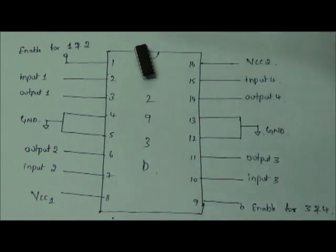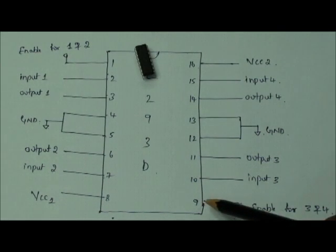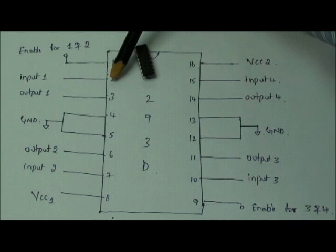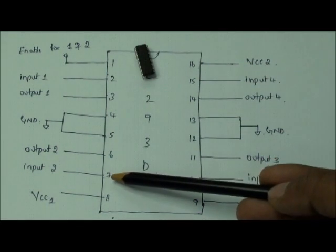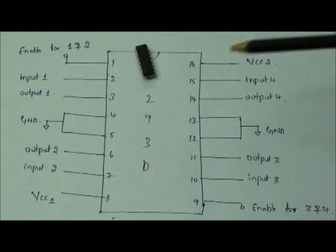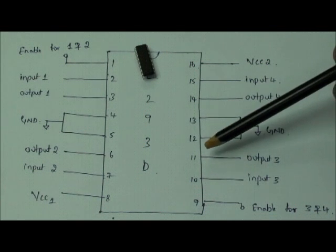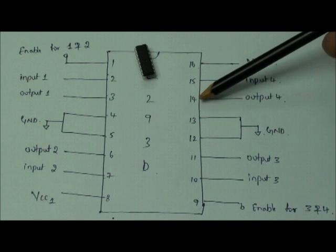Using this L293D we can control 2 motors. The enable pin 1 is for controlling input 1 and input 2, and the enable 2 at pin number 9 controls inputs 3 and 4. The input given at pin number 2 gives output at pin number 3. For input at pin 7, output is at pin 6. For input at pin 10, output is at pin 11. And for input at pin 15, output is taken at pin number 14.